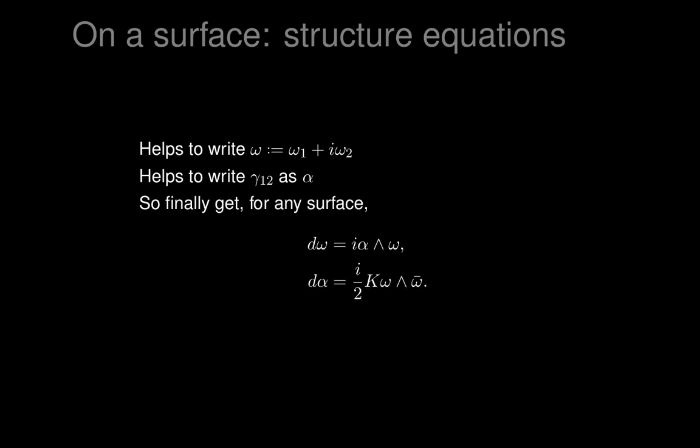We get a complete set of structure equations because all the other structure equations collapse into these. We find that D omega - remember omega is omega_1 plus i omega_2 - can be expressed simply as D omega equals i alpha wedge omega. That controls all the omegas. Then the differential of alpha, which is gamma_1,2, can be written as some multiple of omega wedge omega-bar. D alpha is a real two-form, and omega wedge omega-bar is an imaginary two-form, so multiplied by i it becomes a real two-form.